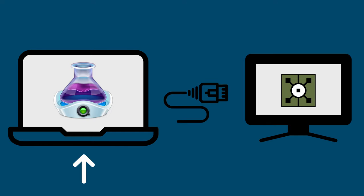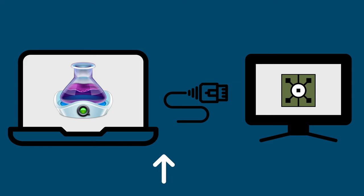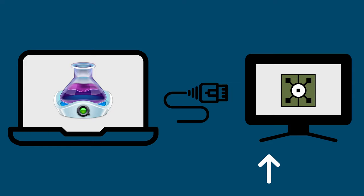If we were to follow the data stream, we would see that we need to convert the video to an HDMI signal, then send it over a cable, and then on the receiving end, convert it back into something that the GPU can read. Each of these steps eats up CPU and delays the video stream more and more. To solve this problem, Siphon and Spout were created.